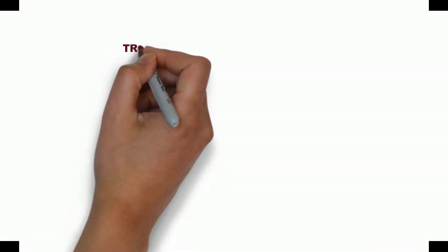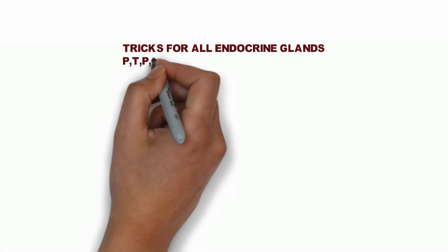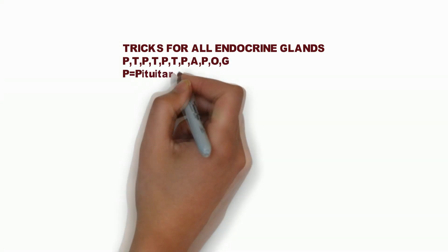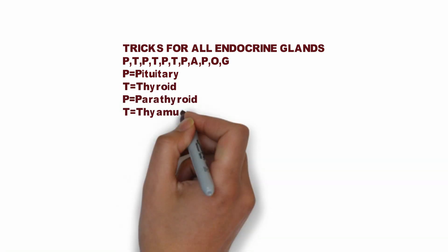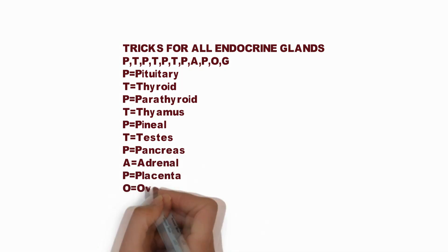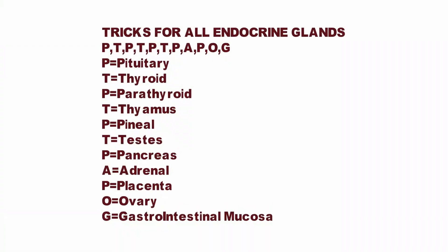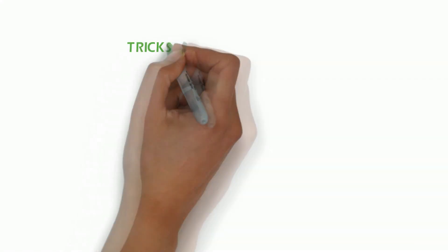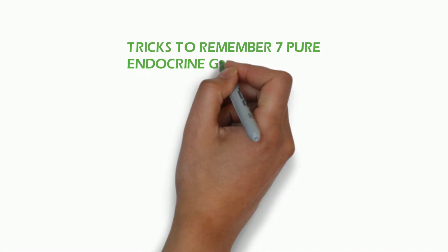Let us have tricks for all endocrine glands. The formula is: P for pituitary, T for thyroid, P for parathyroid, T for thymus, P for pineal, T for testis, P for pancreas, A for adrenal, P for placenta, O for ovary, and G for gastrointestinal mucosa.